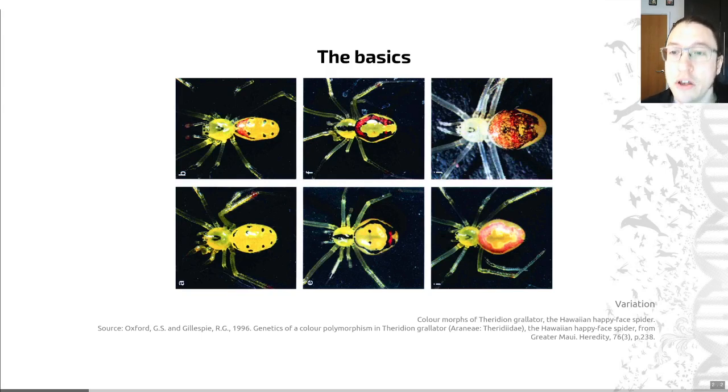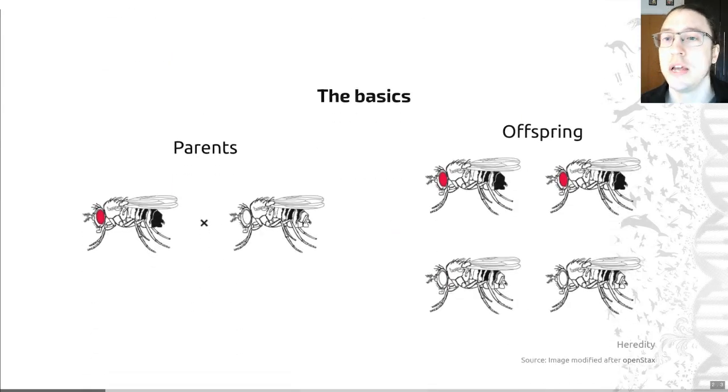The first of these is variation. So among individuals within any population, there is variation in both the morphology, so its anatomy, the physiology, and the behavior of individuals. As an example, these gorgeous spiders on this slide here are all actually members of the same species, they can interbreed with each other. So that's following a thing called the biological species concept. We consider them the same species, but you can see that they vary greatly in terms of their appearance. So variation is a really important point.